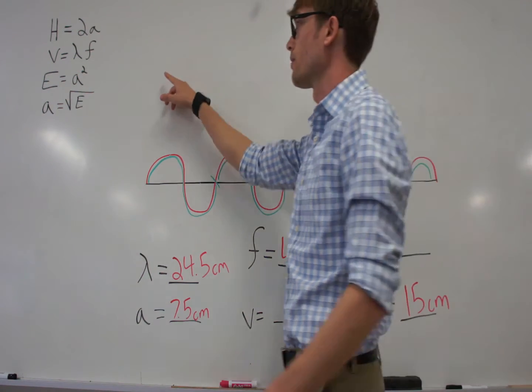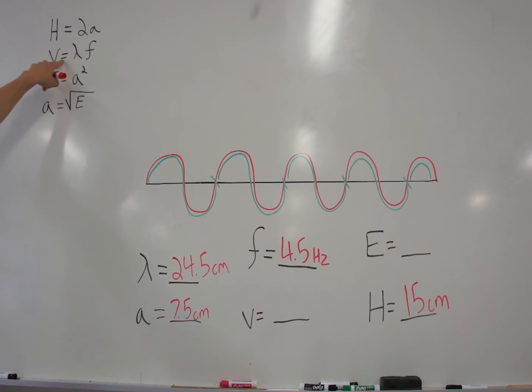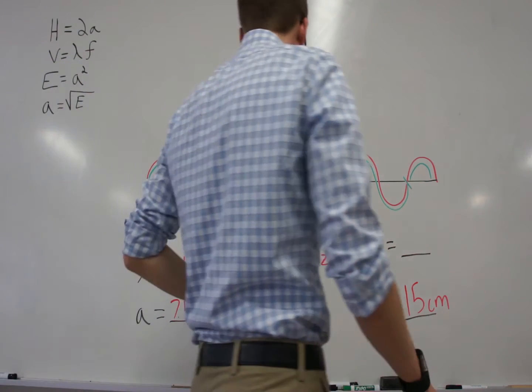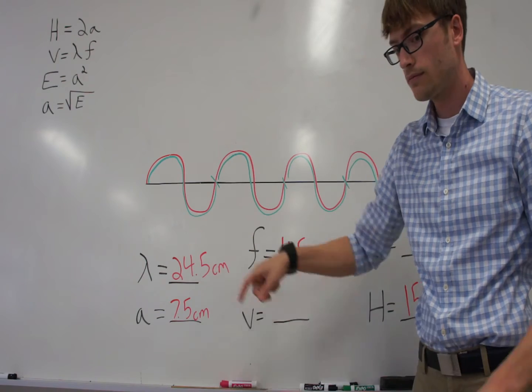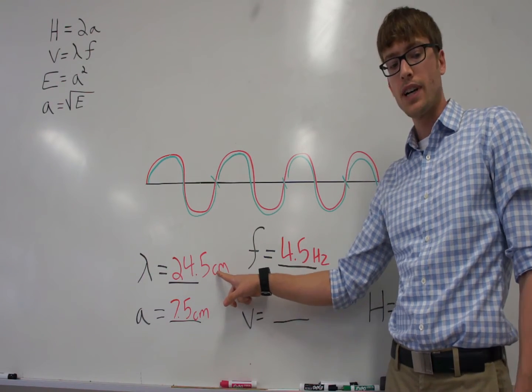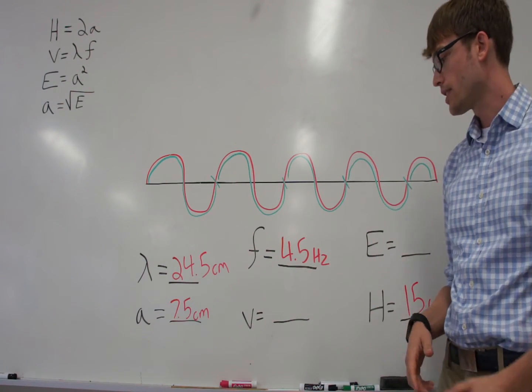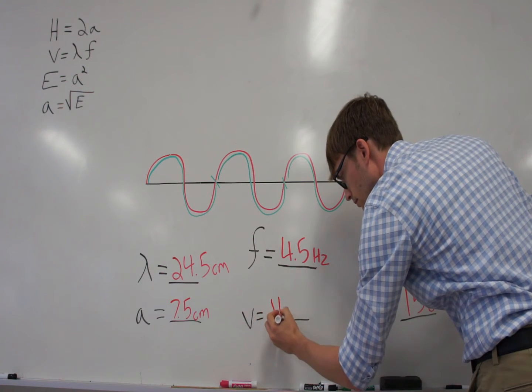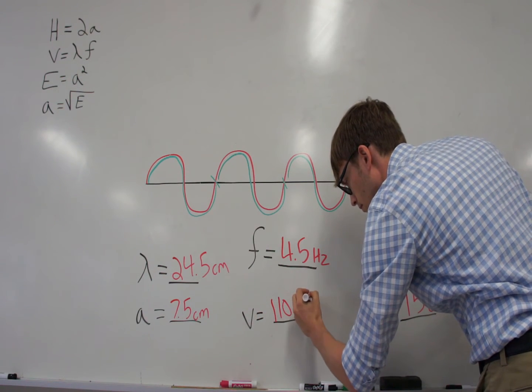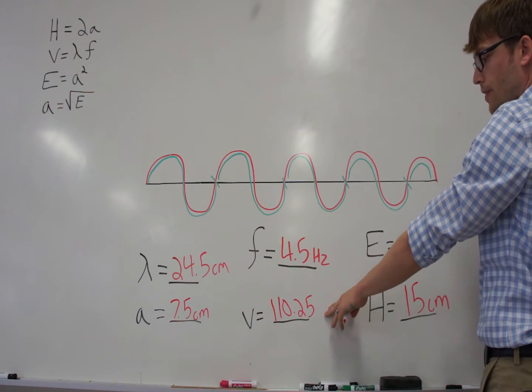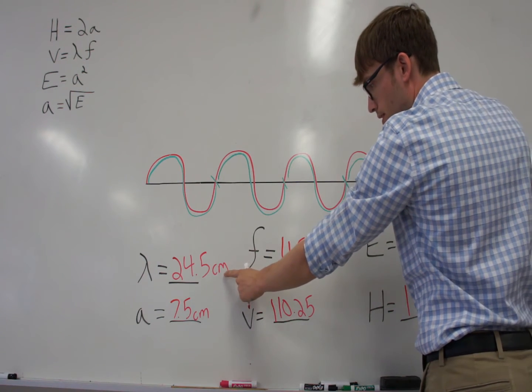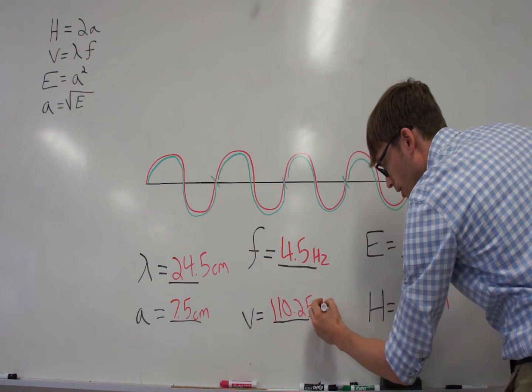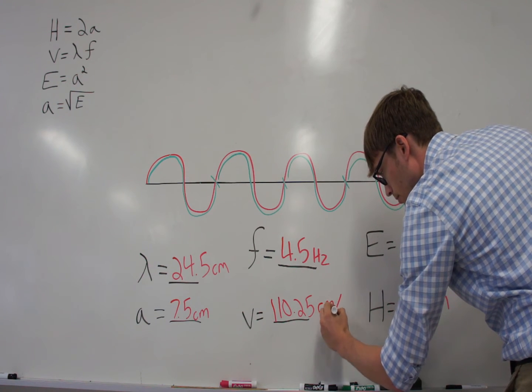Next is our formula for velocity. Velocity is equal to wavelength times frequency. All you have to do for that is multiply the frequency times the wavelength. 24.5 times 4.5 is 110.25. We need a unit for this. Since frequency is how many waves per second, and we're measuring in centimeters, that means it's 110.25 centimeters per second.